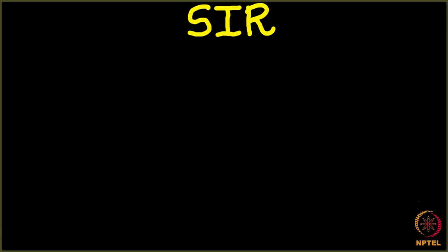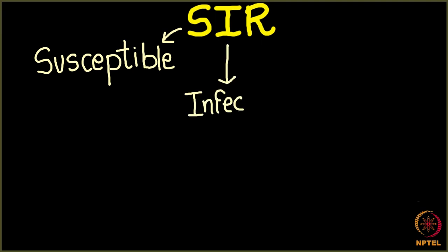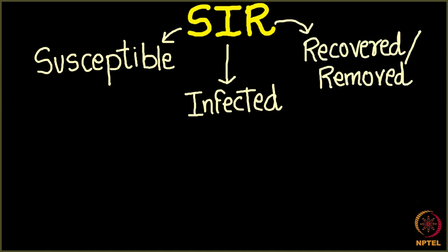Why is it called SIR epidemic model is because it talks about three life cycles of an infection. Whenever you get infected from a disease, you mainly pass through three phases. The first one is susceptible. Susceptible is the one where you are happily living your life, you are not infected from any disease. Then the second stage is infected. You come in contact with somebody who is infected and you get infected. And the last one is recovered or removed.